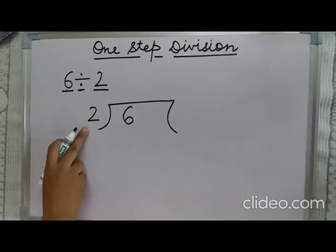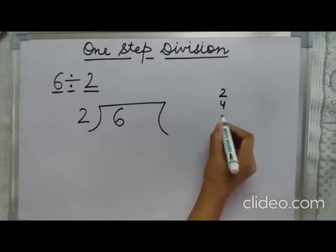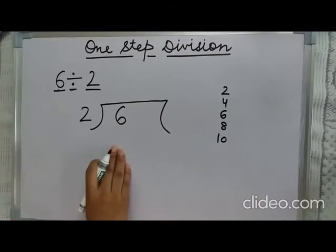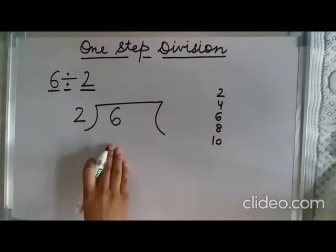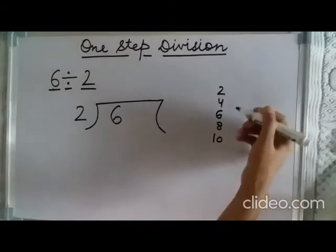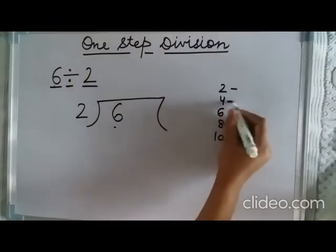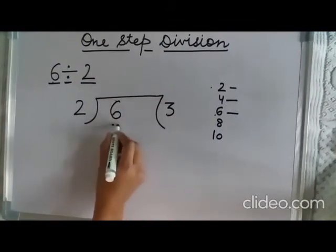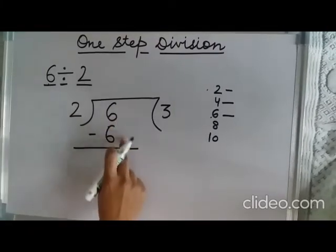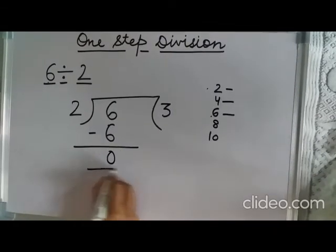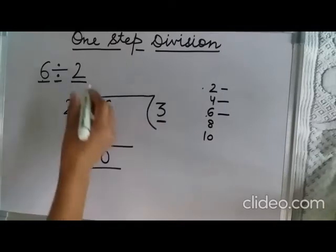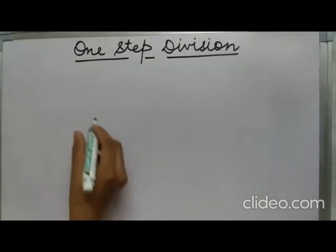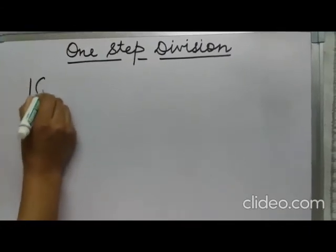Now we read the table of 2: 2 ones are 2, 2 twos are 4, 2 threes are 6, 2 fours are 8, 2 fives are 10. Remember, you don't have to write the tables while doing the sum — just do it in your mind. We look for where 6 appears in the table: it is at the third place, so 2 threes are 6. We subtract 6 from the dividend 6 and get zero. Our quotient is 3.